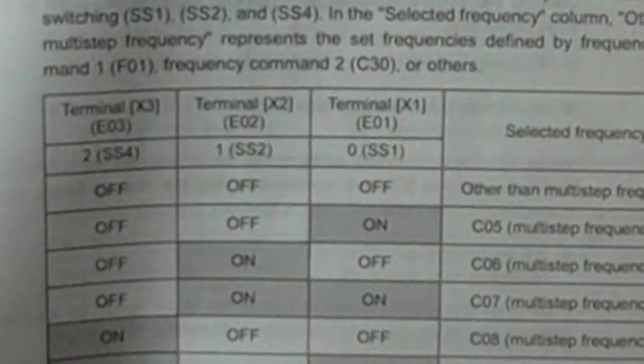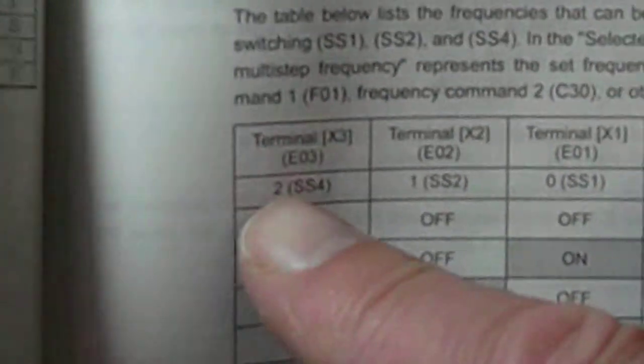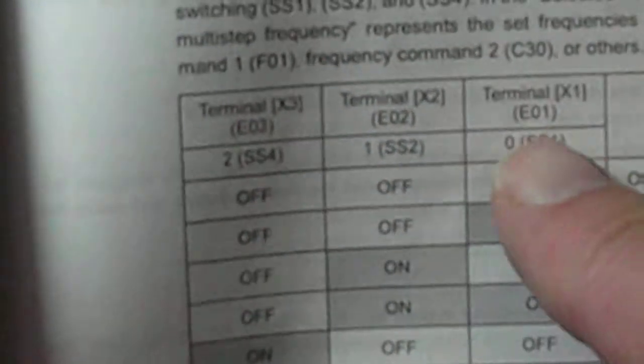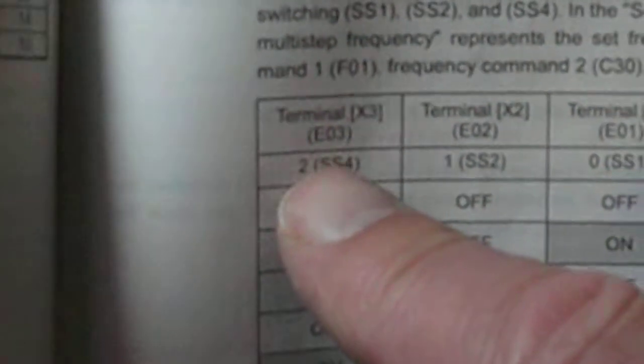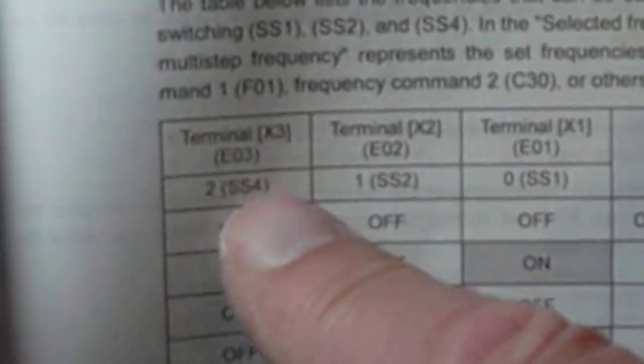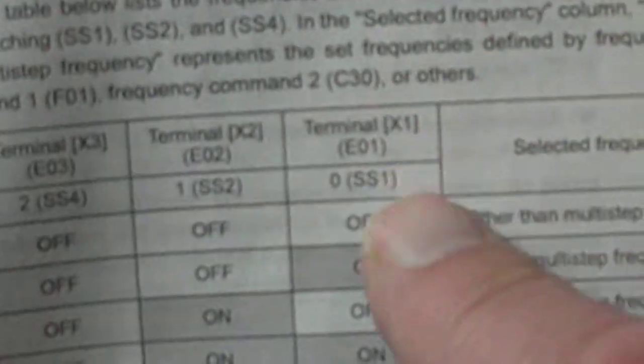So X1, X2, and X3 need to be set to two, one, and zero respectively. So terminal one, which is X3, goes to two, X2 goes to one, and X1 goes to zero. So we need to go into E01 to E03.